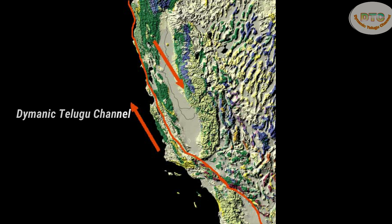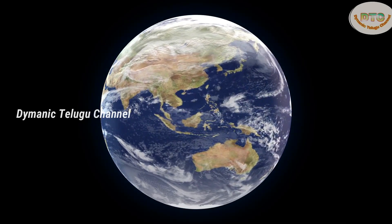The Transform Plate Boundary is where two plates move in a sideways direction. For example, California's San Andreas Fault — here, the west side moves north and the east side moves south. The tectonic plates have been moving for millions of years.